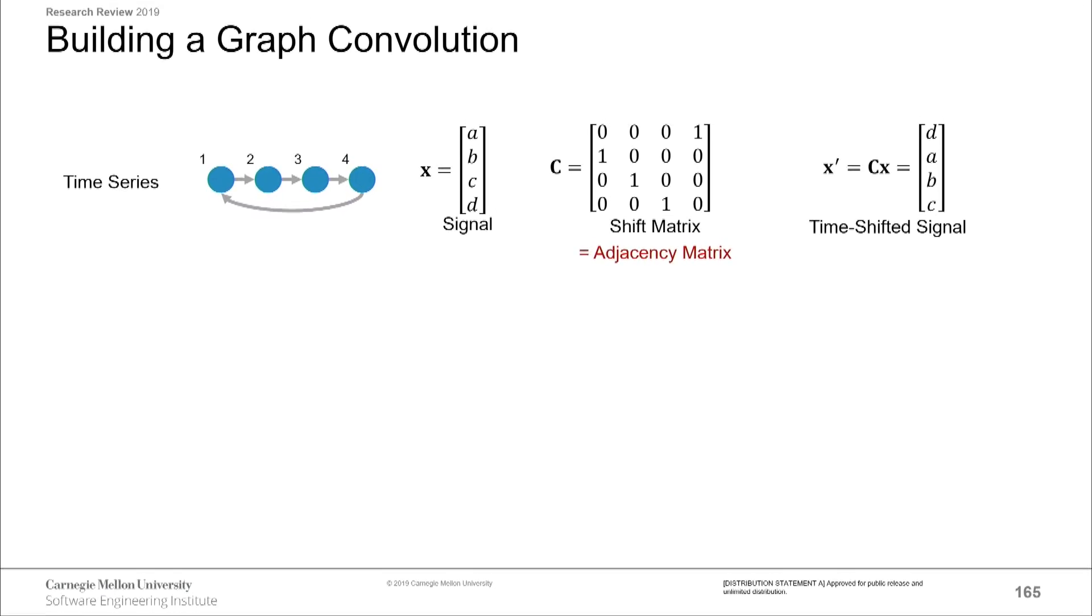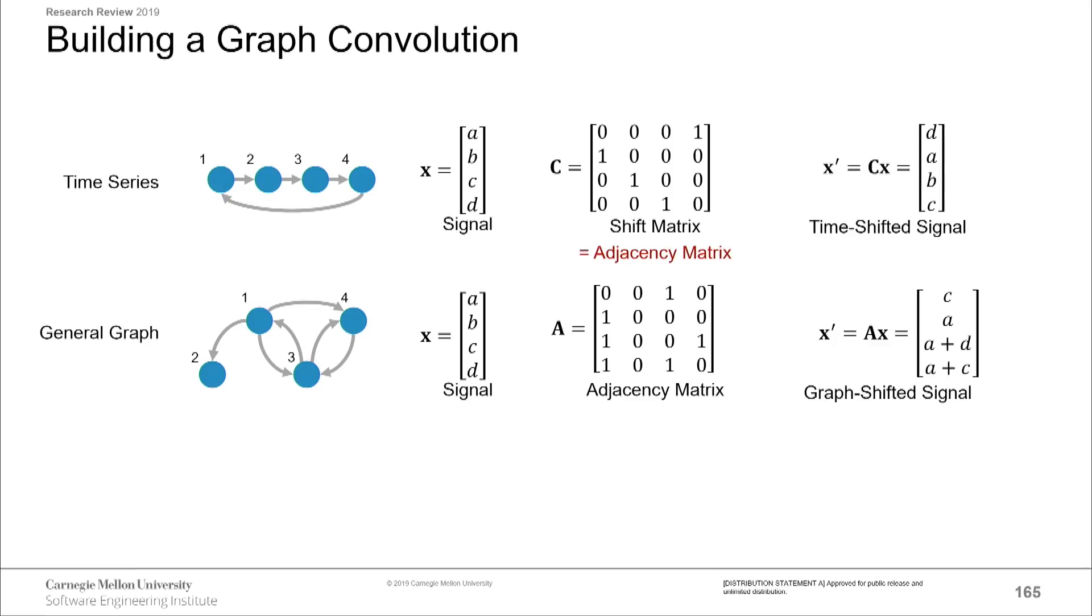So because we have defined the shift for any graph, we can now take some arbitrary graph, take the data that reside on that graph, and we will know what a graph shifted signal looks like. That sounds a little arcane. Why do we care about a graph shifted signal? Well, if you think back to your undergraduate DSP course, I'm sure you all remember that any linear shift invariant filter can be represented as a polynomial of shifts. So with just the adjacency matrix, we can define an operation like graph convolution. And with graph convolution defined, we're off to the races. We have graph convolutional neural networks.